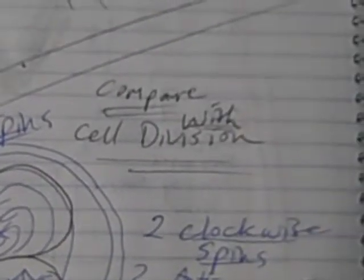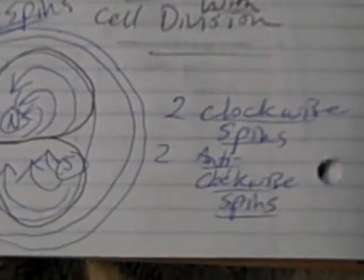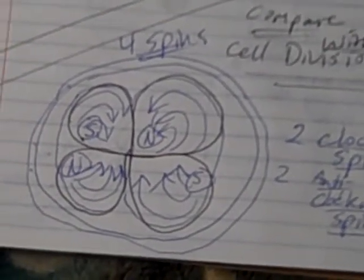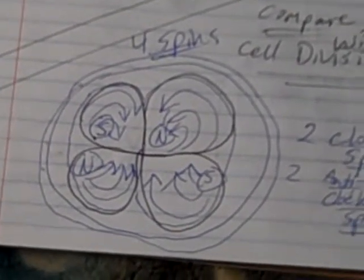Well, let's just take a look down here for comparison and look at cell division. What does cell division have? Wow, this is interesting. Cell division has four spins. Look at that.